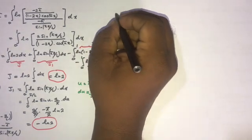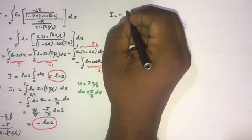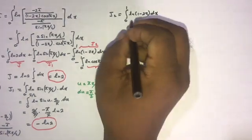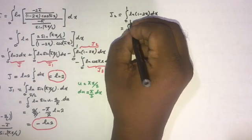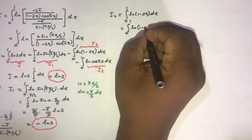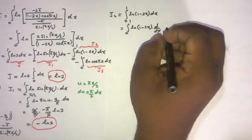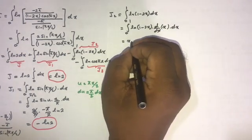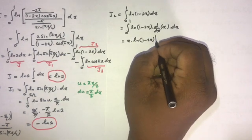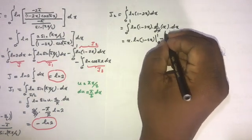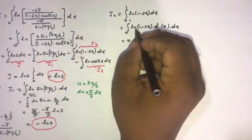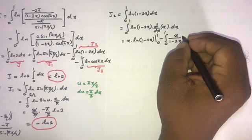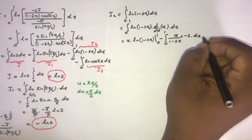J2 equals the integral from 0 to 1 of ln(1 - 2x) dx. I will use integration by parts, taking ln(1 - 2x) as the first function. This gives x times ln(1 - 2x) evaluated from 0 to 1, minus the integral from 0 to 1 of x times the derivative of ln(1 - 2x), where the derivative of (1 - 2x) gives a factor of minus 2 by the chain rule.